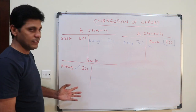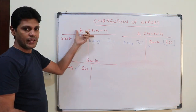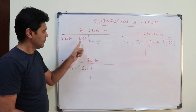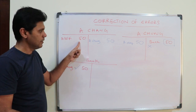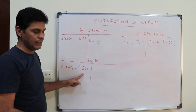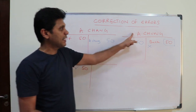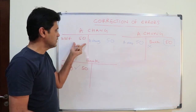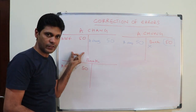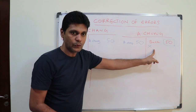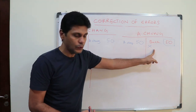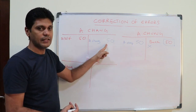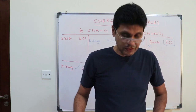The customer A Chang paid fifty dollars — there was an outstanding balance. The accountant debited the bank account correctly but credited A Chang's account incorrectly, so the balance is still outstanding. To correct this entry, you have to reverse it: debit this entry and credit this account.